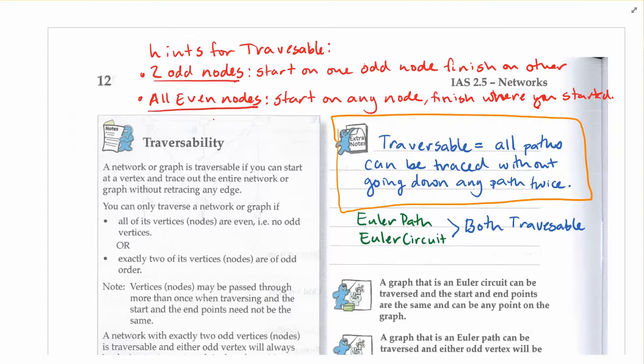If you're thinking this sounds a lot like Euler, it basically is. An Euler path and an Euler circuit are both traversable because they both require that you can walk along every single edge within a network.